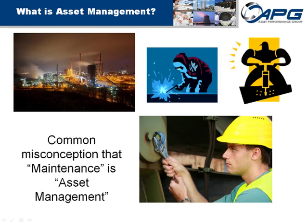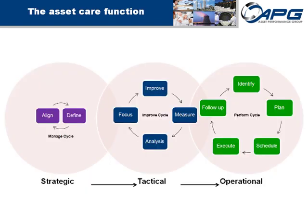Asset management is often confused as being a maintenance initiative involving only the maintenance department. Although maintenance has a large role, we at APG call asset management the asset care function — not to confuse it with the maintenance department, as it involves all levels of the organization. Senior management needs to set budgets and align goals; operations must provide input on equipment performance; engineering must design and determine correct maintenance, acquisition, and disposal; maintenance must execute the work; and unions and human resources must establish incentive, performance measurement, and buy-in.